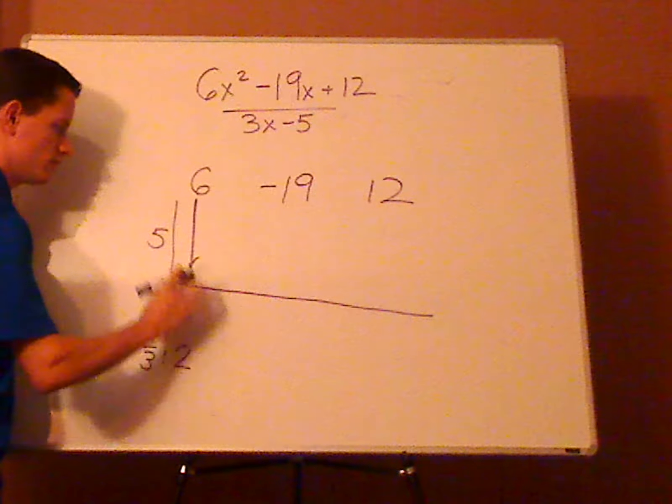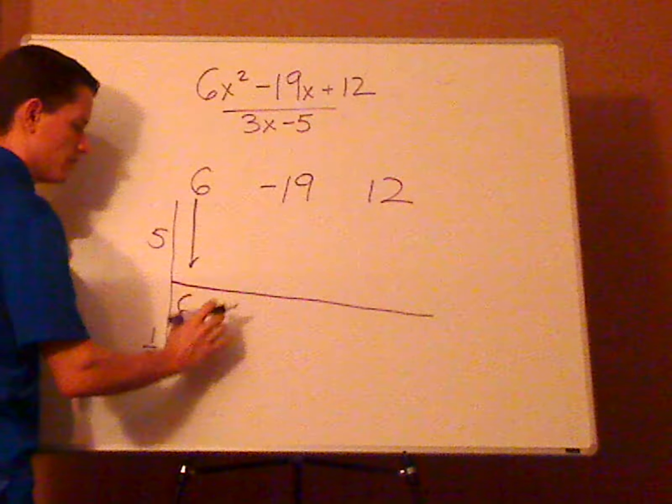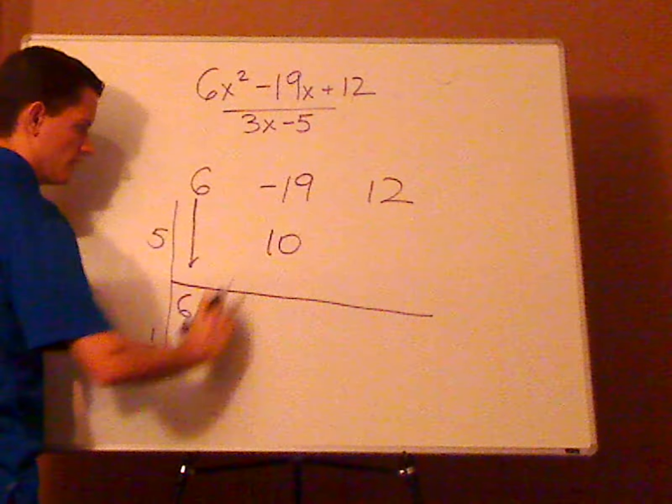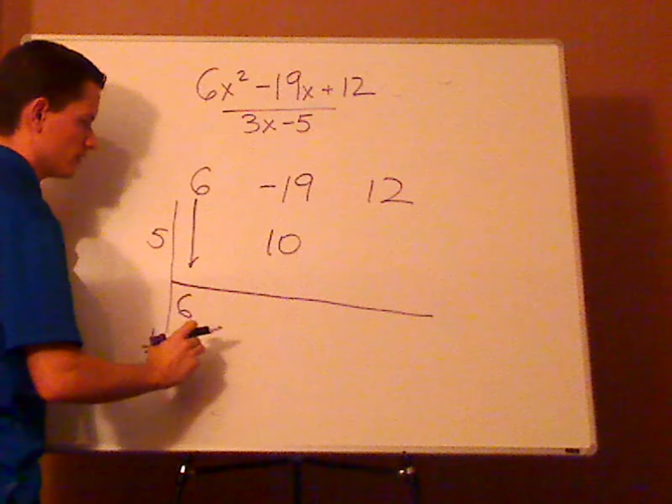Then take this 2 and multiply it to the 5 and put that in the next column. So that would be 10. It's still going kind of diagonally, as you can see.